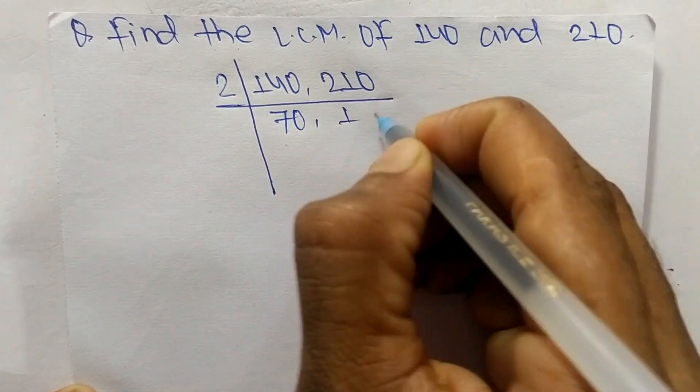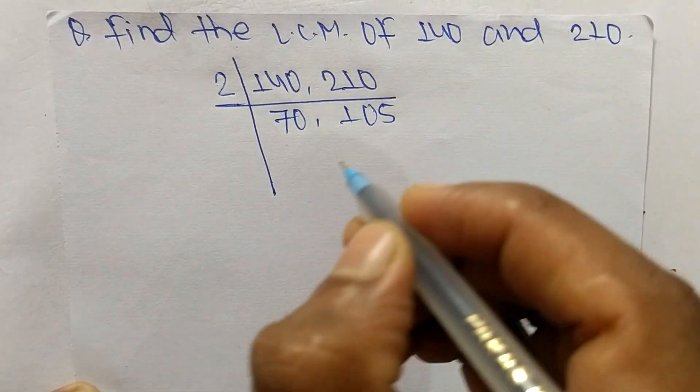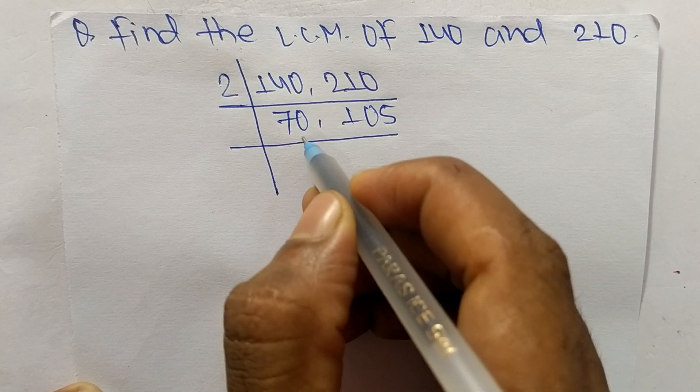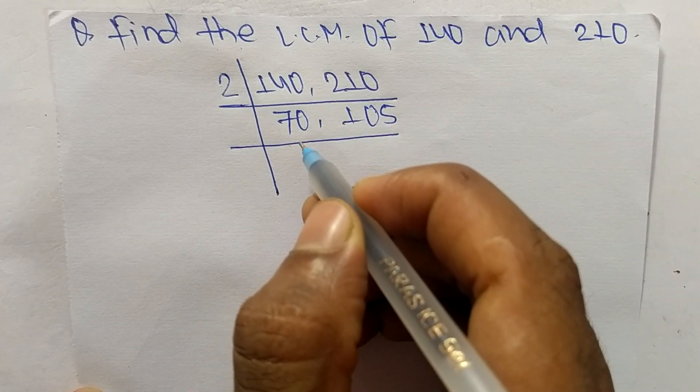means 140, 2 times 105 means it is 210. Now you can't exactly divide these both numbers, so we